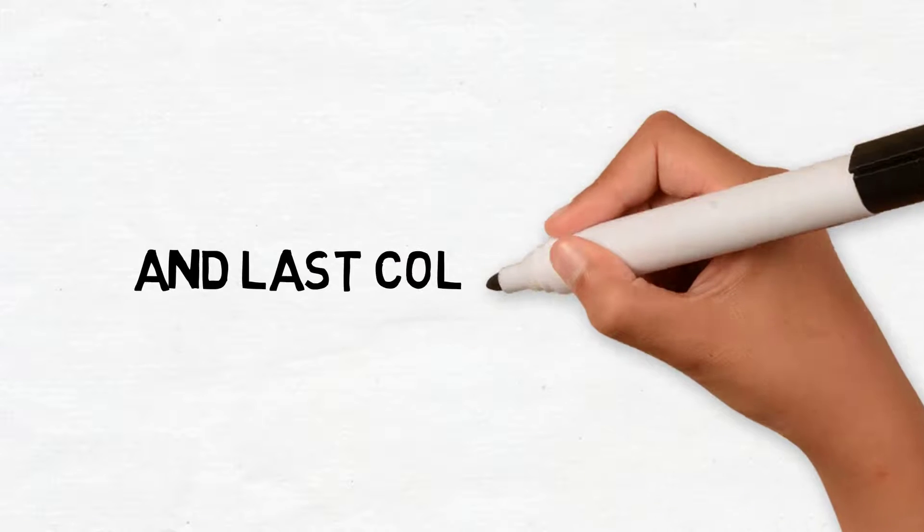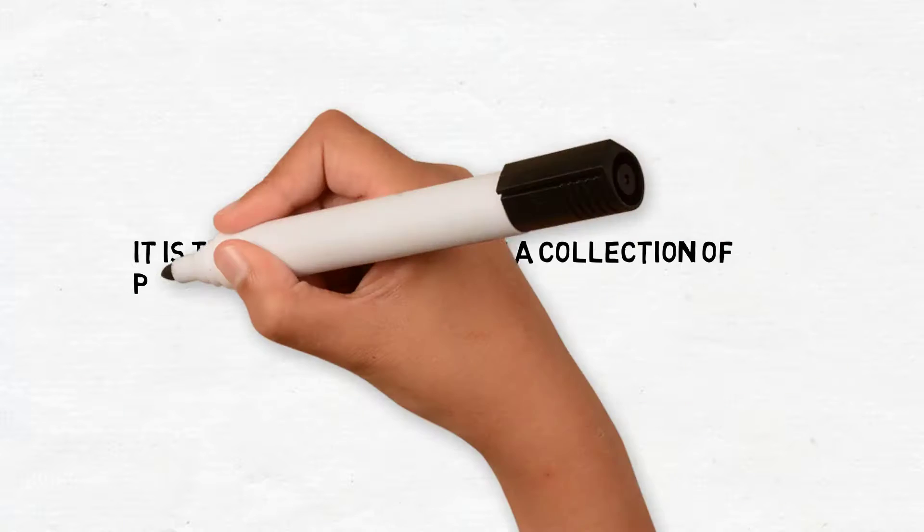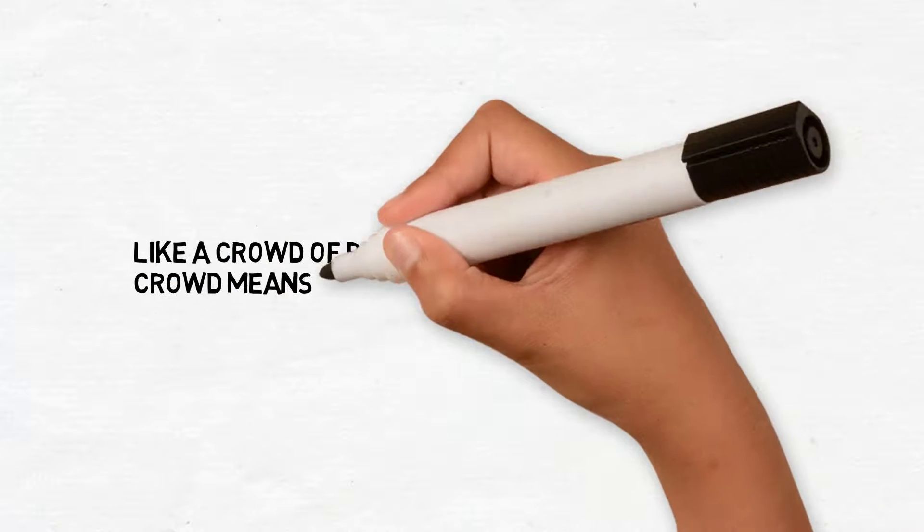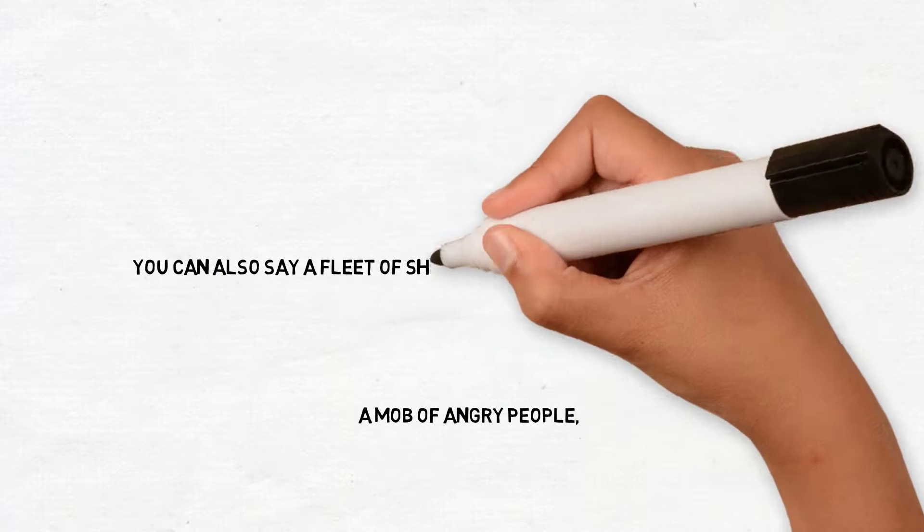And last, collective noun. It is the name of a group or collection of persons or things expressed as one whole unit. Like a crowd of people - crowd means there are so many people in there. A mob of angry people, you can also say a fleet of ships - it means there are too many ships.